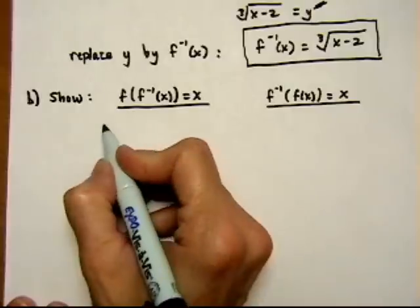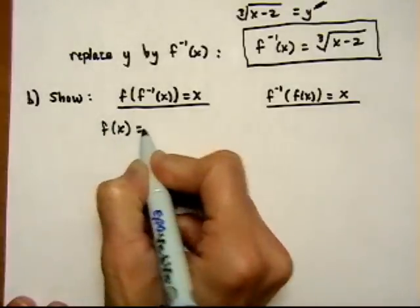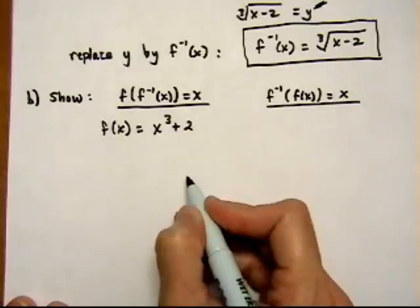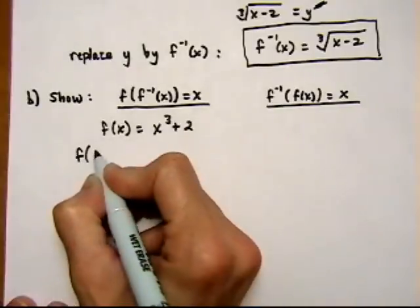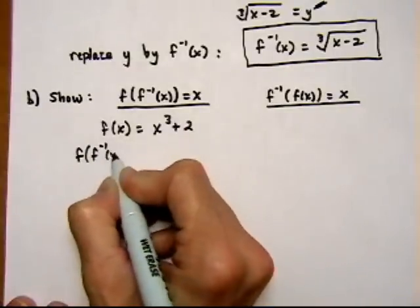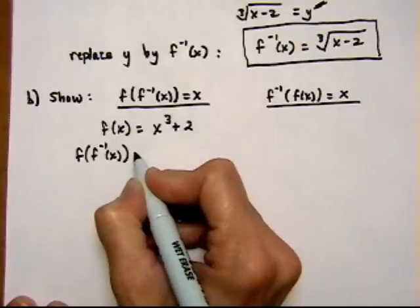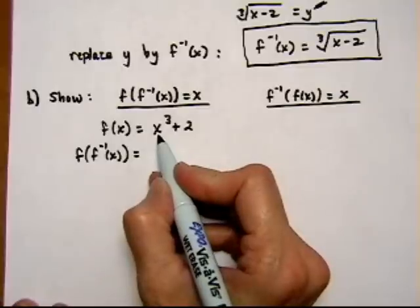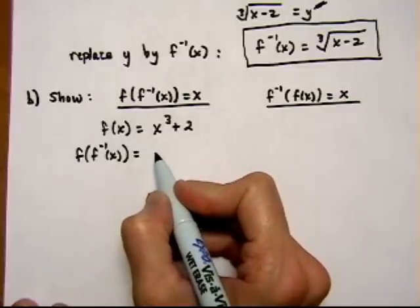Let's start on the left with f of x. And f of x is equal to x cubed plus 2. And then we want to find f of f inverse x. And this should give us the x back out again. So let's see what we get.